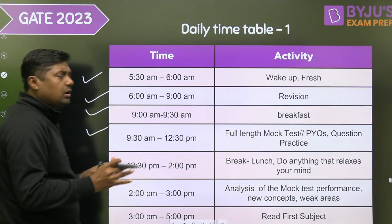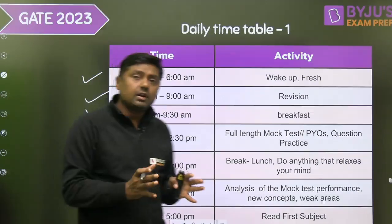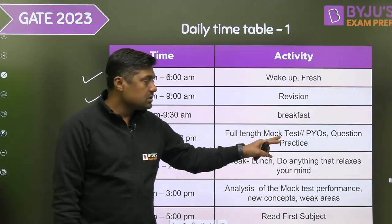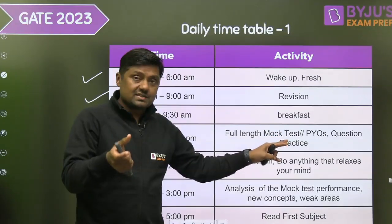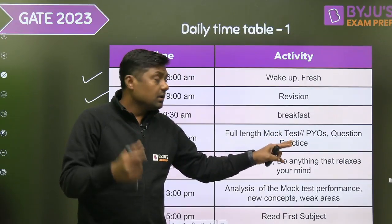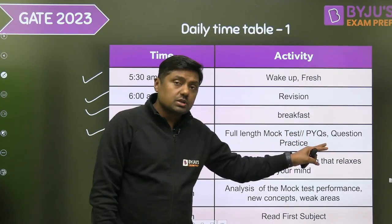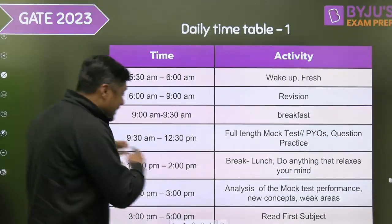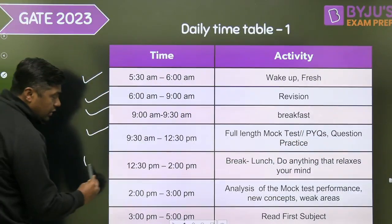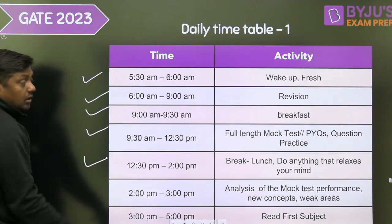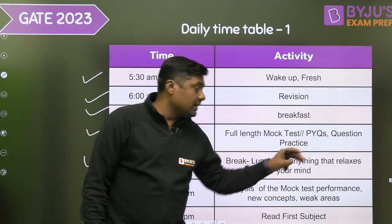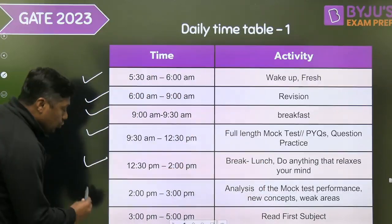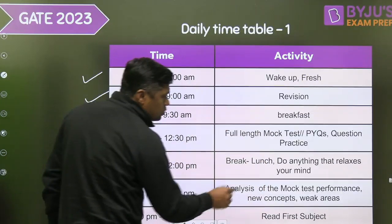From 9:30 AM to 12:30 PM, take a full-length mock test with a virtual calculator and scribble pad — this is on alternate days. On the next day, solve previous year questions or questions from standard textbooks during the same time slot. From 12:30 to 2 PM is your break — take lunch and do anything that relaxes your mind, as that is also important.